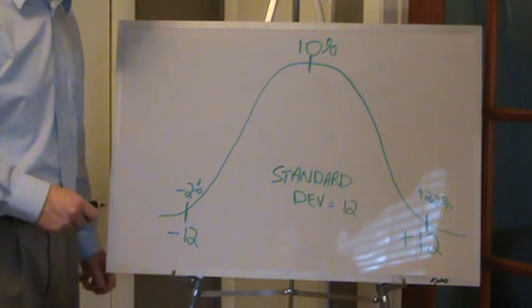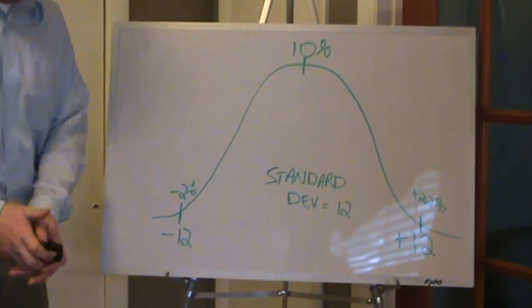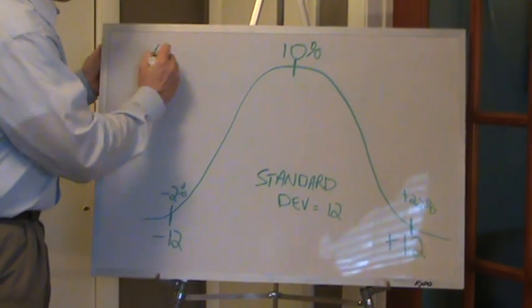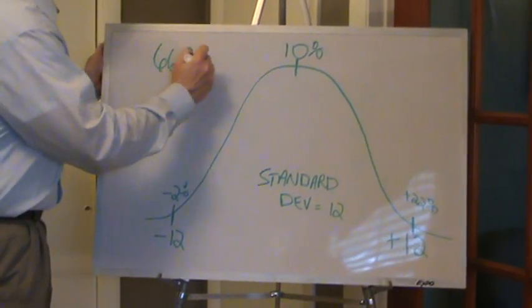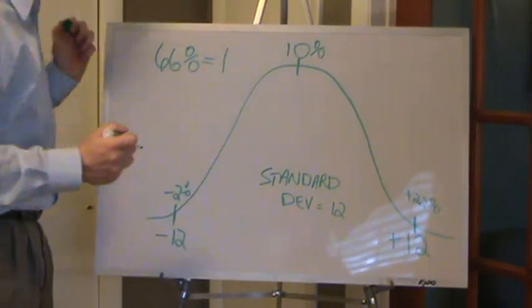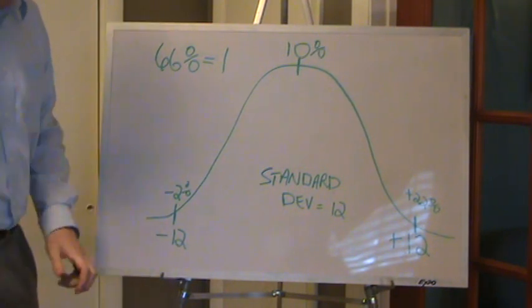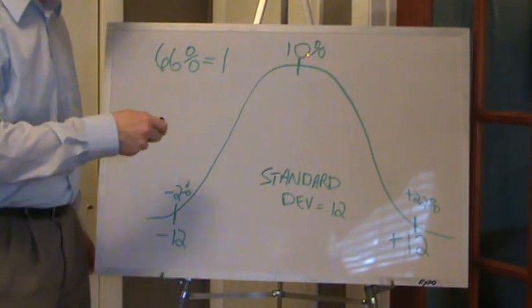For this example it would be 12. What that means is that you have a 66% chance of having one standard deviation of that return of 10%.